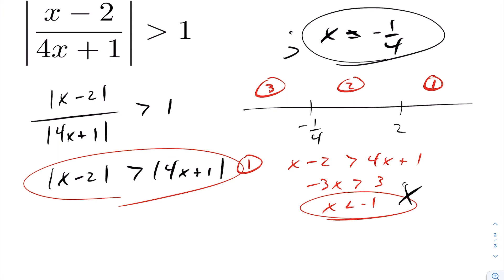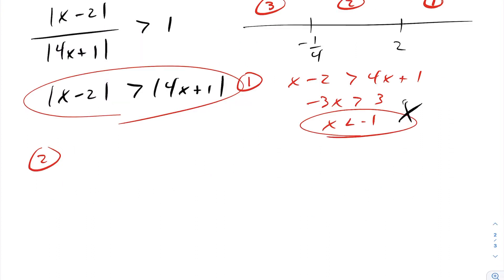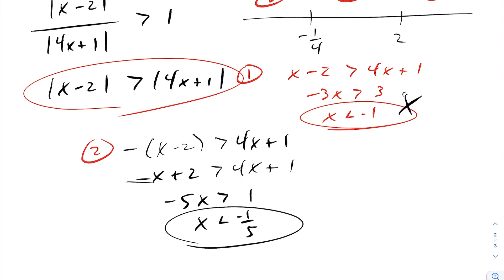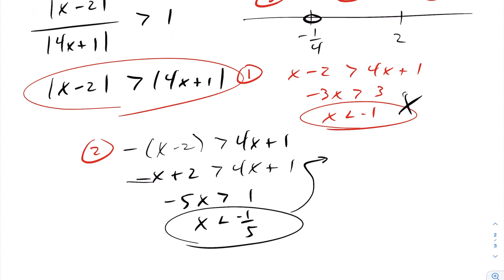For interval two, the absolute value of x minus two is negative and the other factor is positive. Dropping the left-side absolute value requires introducing a minus sign. Solving, we get x is less than negative one fifth. We must also remember that negative one quarter is inadmissible since it is undefined. So the solution set for interval two runs from negative one quarter — open bracket — to negative one fifth.